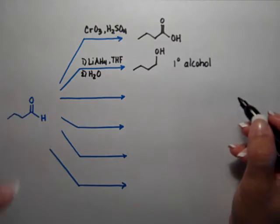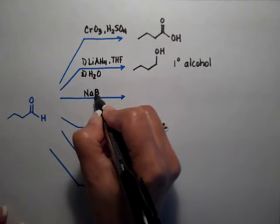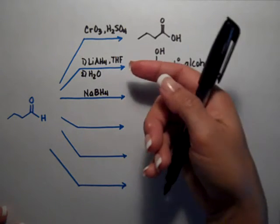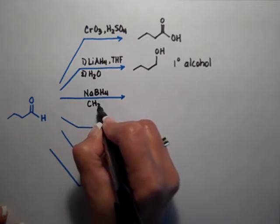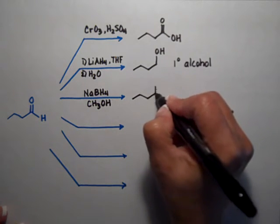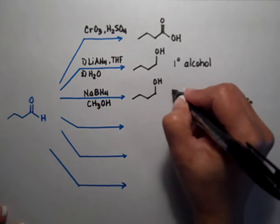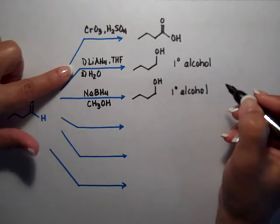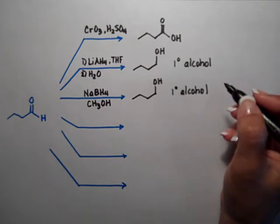We could go ahead and use sodium borohydride. Sodium borohydride will give you the exact same primary alcohol but it's easier to work with sodium borohydride. You don't have to be so worried about the moisture in the air. Sodium borohydride you can actually use it with methanol as solvent. It will reduce ketones and aldehydes and if you have an aldehyde of course you will go to the primary alcohol.